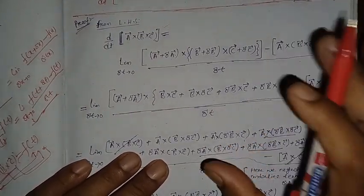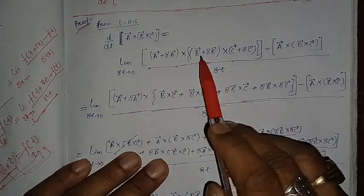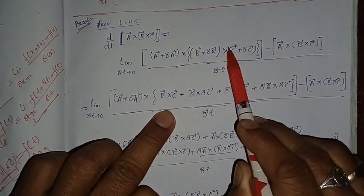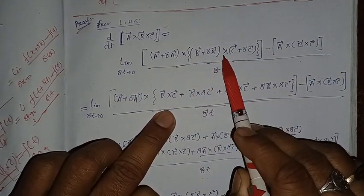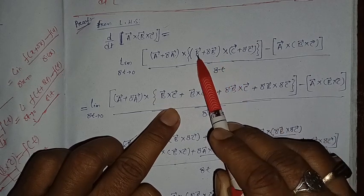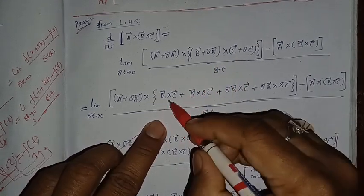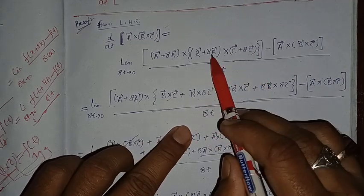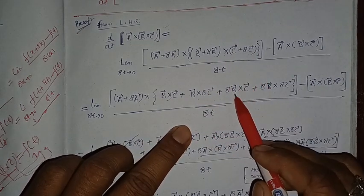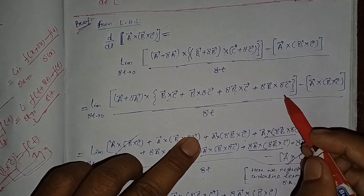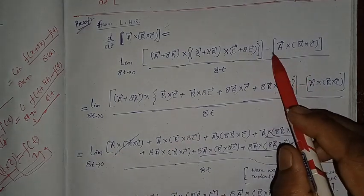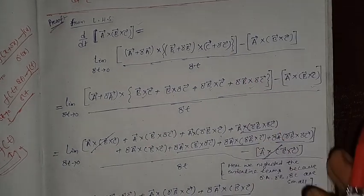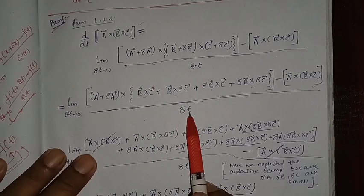Now we are going to expand by simple multiplication between the two terms. Expanding (b + Δb) × (c + Δc) gives: b × c + b × Δc + Δb × c + Δb × Δc. Then the full expression becomes [a × (b×c + b×Δc + Δb×c + Δb×Δc) − a × b × c] / Δt.